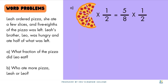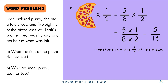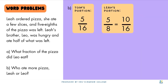Now we have a word problem. Leah ordered a pizza, ate a few slices, and 5 eighths of the pizza was left. Leah's brother was also hungry and ate half of what was left. Part A asks: what fraction of the pizza did he eat? And Part B: who ate more — Leah or her brother? We have 5 over 8 pieces left and we want half of it, so we calculate 5 over 8 times 1 over 2, which gives us 5 over 16. To compare portions, we can expand Leah's 5 over 8 to 10 over 16, so Leah ate more of the pizza.